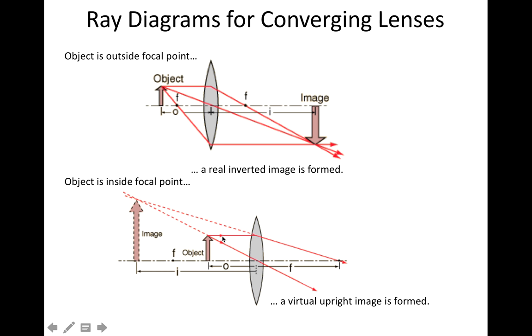And this one that comes out parallel to the principal axis here and bends down towards that principal axis. Neither of these rays actually go through this dotted representation of the image, which is all the way over here to the left. And so we say that that image is a virtual image because that light ray does not actually pass through that image.